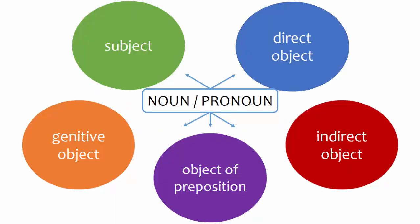In general, every noun or pronoun in a sentence is one of five things: the subject, the direct object, the indirect object, the object of preposition, or the genitive object. You can think of these things as noun functions.